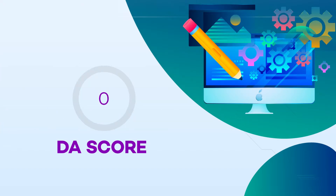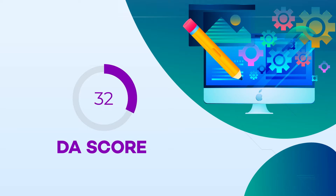When you start a website, it starts with zero. And as you build on with your SEO activities, you build on the score. Any website that crosses the average score of 35 is considered really good.